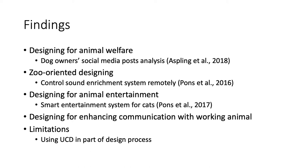I'll talk about the findings in these articles. These articles can be categorized into four ACI directions. The first direction is designing for animal welfare. For example, in one article, a qualitative text analysis was undertaken on social media posts from the perspective of dogs, and this method helps the authors to understand animals' needs better. The second direction is zoo-oriented designing.